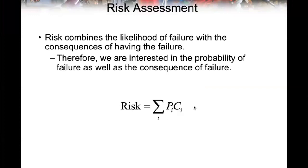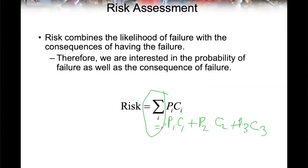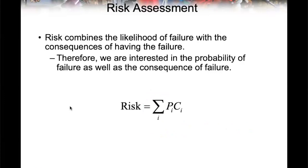How do we aggregate the risks? We do probability times consequences and add them up: P1×C1 + P2×C2 + P3×C3, and so on. Then you have the aggregate overall risk. That's the first equation in risk management that we need to know — probability times impact. We look at probability and consequences, multiply them, and then prioritize them. If the system has multiple parts, calculate risk for each part and add them up.